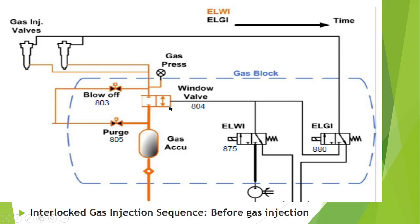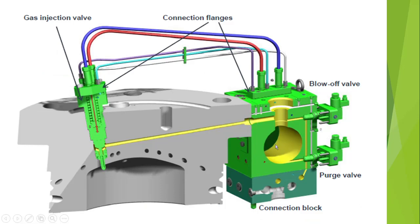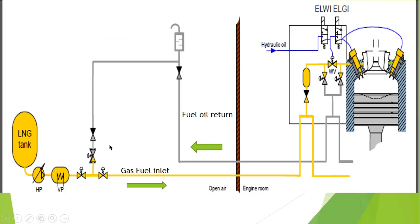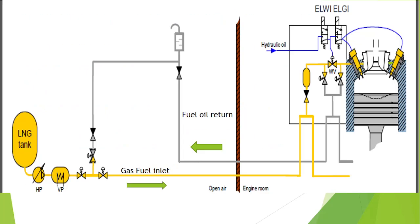From the gas accumulator, the gas is waiting at the window valve. When this window valve opens, it provides a passage allowing the gas to go and wait at the gas injection valve. So the fuel from the LNG fuel tank goes to the gas accumulator, where 25 to 30 strokes of fuel for injection is accumulated. The fuel from the gas accumulator is waiting to go through the injector after getting a passage from the window valve.